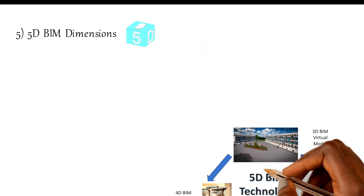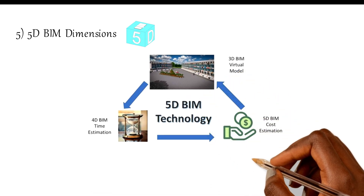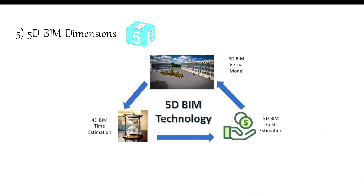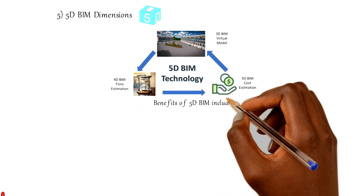Number five: 5D BIM dimensions. This is 4D BIM plus estimate or cost. The function of the 5D BIM model is to integrate cost, schedule, and design in a 3D output. This model is tasked with forecasting — predicting the flow of finance for a project and tracking the progress that has been made concerning the project. Benefits of 5D BIM include cost analysis.